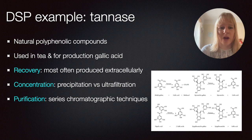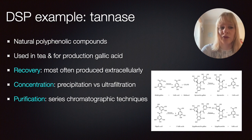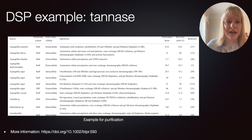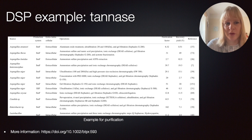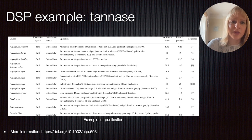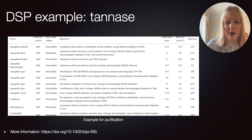The next step for tannase is concentration, where people look at either precipitation or ultrafiltration as the two most common methods — bearing in mind that the concentration step is where you often lose a lot of material. Then comes purification, where again you look at a series of chromatographic techniques. Different from lysozyme where cation exchange was most common, there are a few other chromatographic options to consider for tannase, depending on the source microorganism, which has a big impact on the downstream processing.